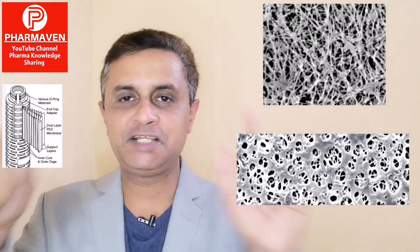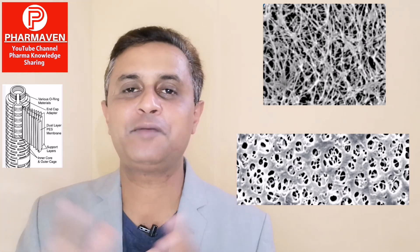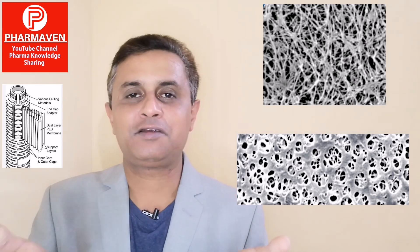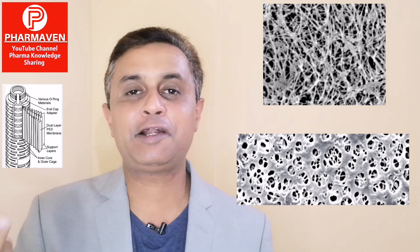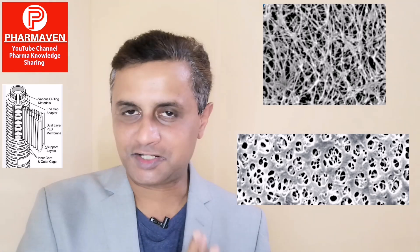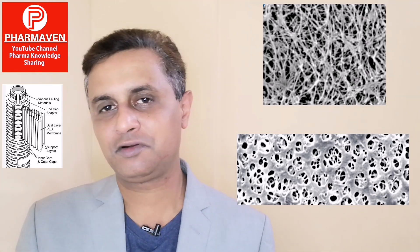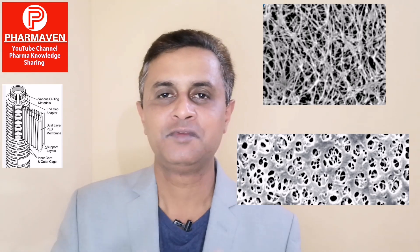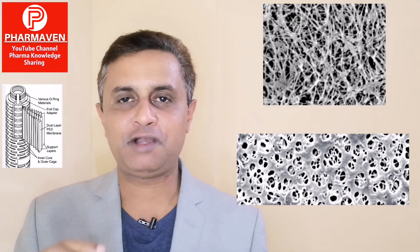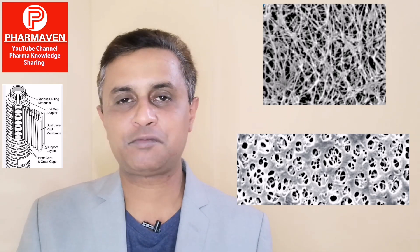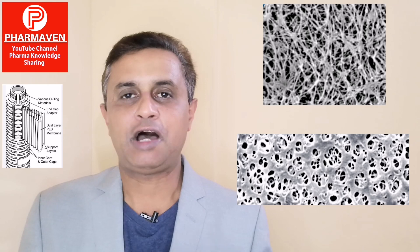The 0.2 micron filter is not a simple sieve structure — it is a complex microfiber structure. Just as we sieve fine powder to get a particular particle size through a physical sieve, in a filter achieving 0.2 micron size it is not a simple sieve. It is a complex structure of microfibers which ultimately have a pore size of 0.2 micron or smaller, giving it the capability to retain microorganisms of 0.2 micron and larger.